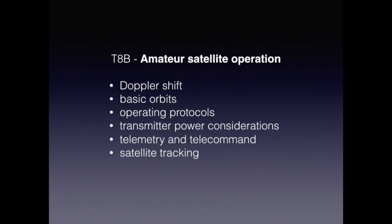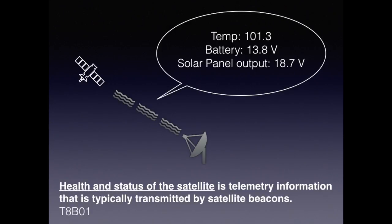Next up is amateur satellite operation. We're going to be talking about Doppler shift, basic orbits, operating protocols, transmitter power considerations, telemetry and telecommand, and satellite tracking. Since it's not convenient to pop by and inspect a satellite in orbit, they're designed to transmit information via telemetry. For the exam, know that the health and status of a satellite is telemetry information typically transmitted by satellite beacons.